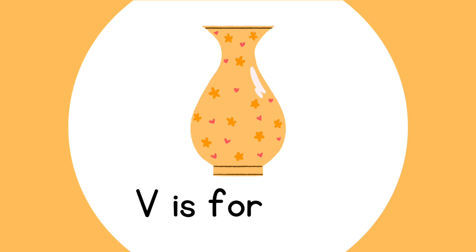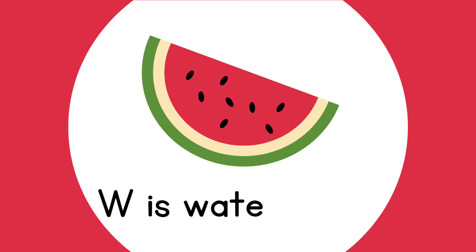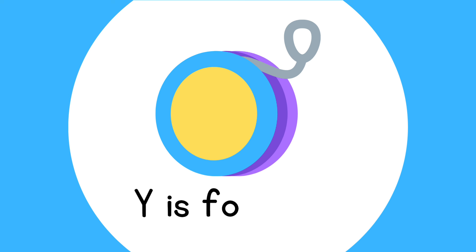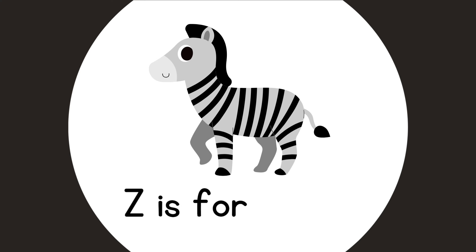V is for Vase. W is for Watermelon. X is for X-Ray. Y is for Yarn. Z is for Zebra.